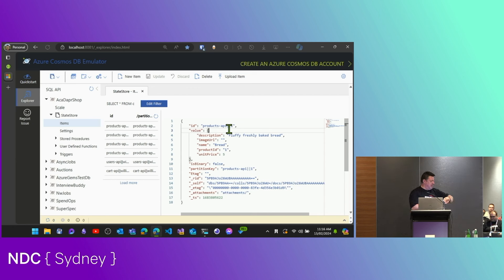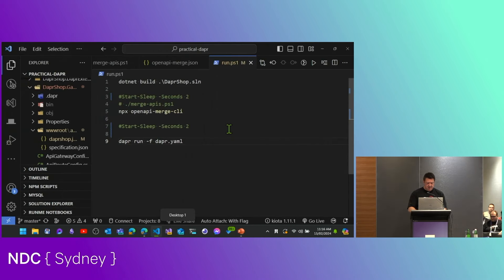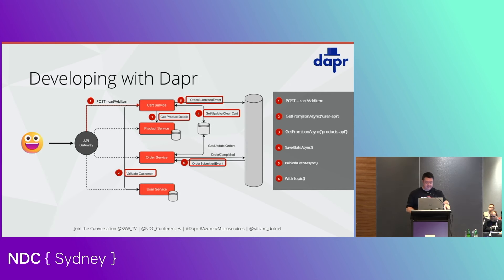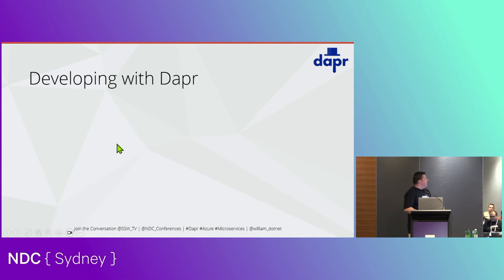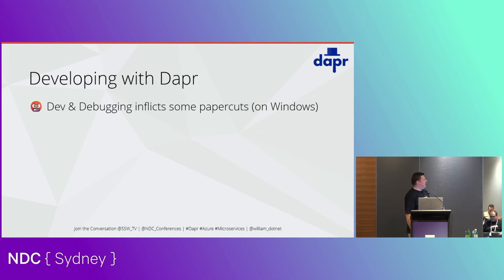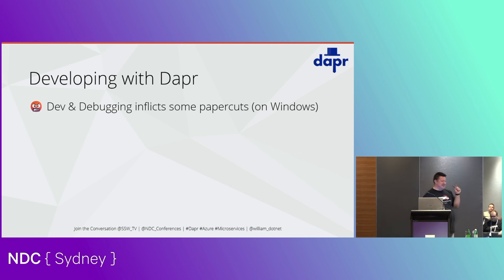Need to move on quickly. So here's the little shop microservice system we built. The dev and debugging has some paper cuts. .NET Aspire — I've already played with it with Dapr — super awesome. It actually solves this problem for me, so F5 out of Visual Studio is now almost reality. If you haven't used .NET Aspire, go use that. If you haven't used Dapr, use it together with Aspire.